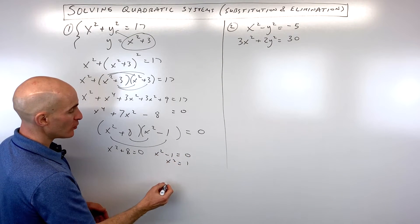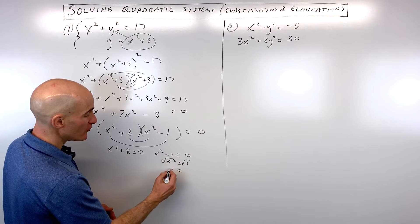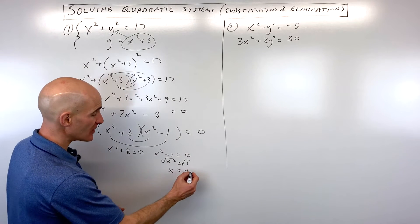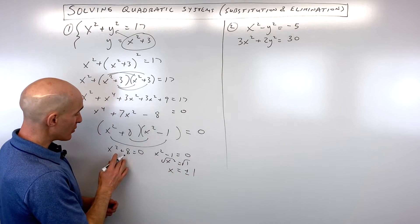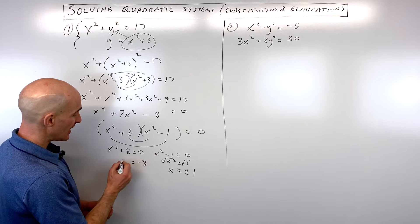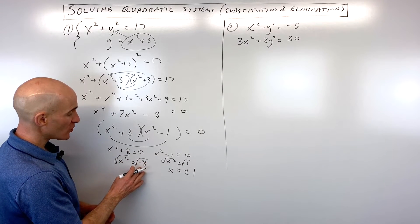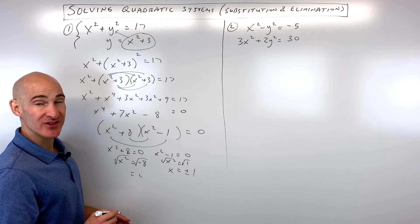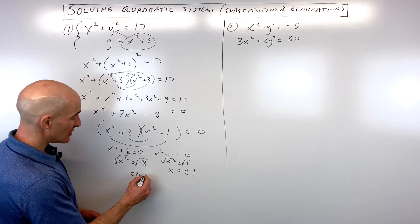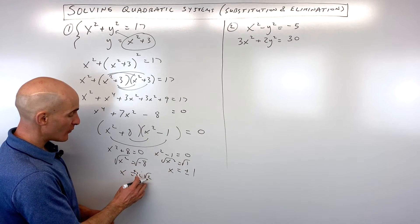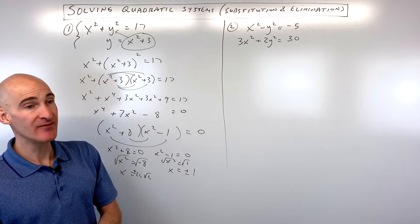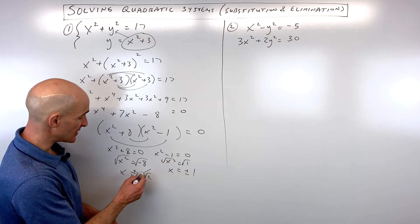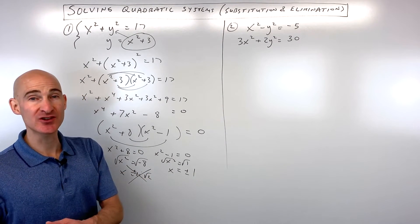For x squared minus 1 equals zero: adding 1 to both sides gives x squared equals 1, and taking the square root of both sides gives two answers — positive or negative 1. For x squared plus 8 equals zero: subtracting 8 gives x squared equals negative 8, and taking the square root of negative 8 gives imaginary numbers — positive or negative 2i root 2. This means there's no real solution for this part; it's an extraneous root, an extra or false solution.